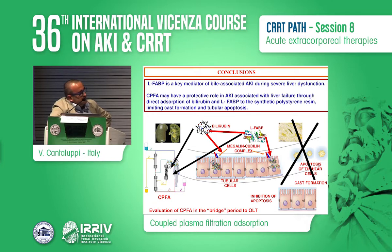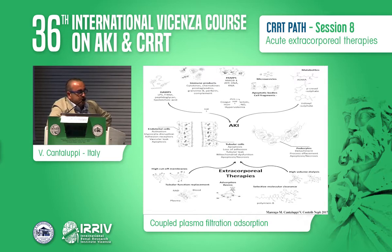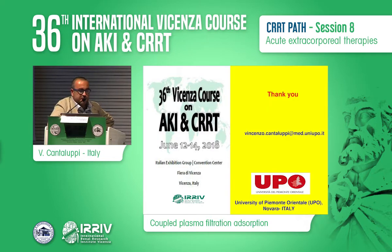L-FABP is the key mediator of bilirubin-associated AKI during severe liver dysfunction, and CPFA may have a double protective effect: absorption of bilirubin and absorption of liver-type fatty acid binding protein, which is essential for bilirubin internalization into tubular epithelial cells. This may be a potential application of CPFA as a bridge toward orthotopic liver transplantation. In summary, during sepsis or severe liver dysfunction, extracorporeal therapies may have a potential protective effect in modulating the immune response and removing molecules deeply involved in organ failure, particularly in the mechanism of acute kidney injury.